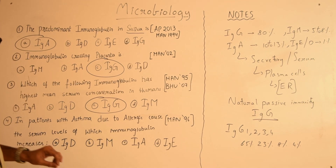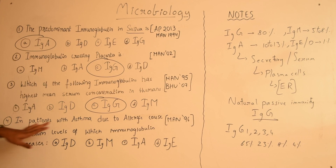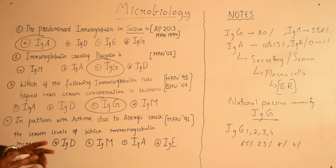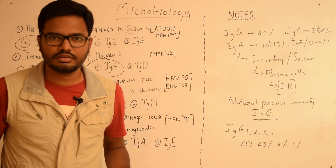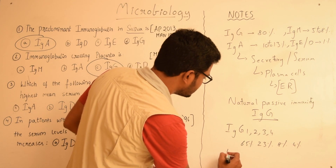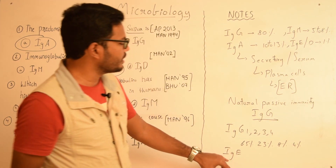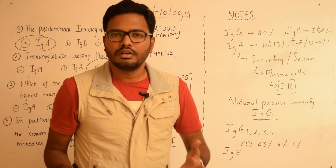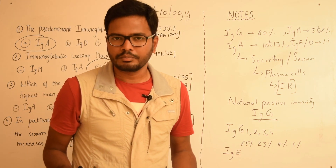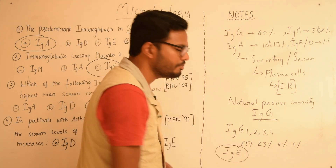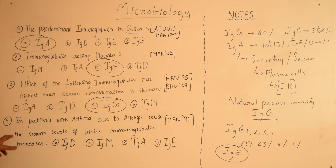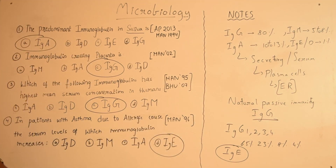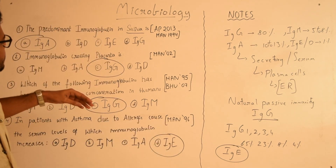The final question: in patients with asthma due to allergic cause, the serum levels of which immunoglobulin increase? Whether it's an anaphylactic reaction or any allergic manifestation — such as hay fever, eczema, or asthma — IgE is the immunoglobulin associated with these reactions. Studies have also shown IgE is associated with certain parasitic infections. So the answer is IgE.